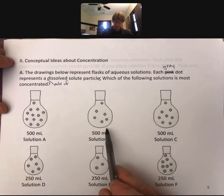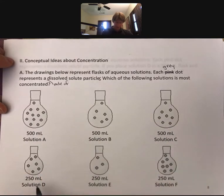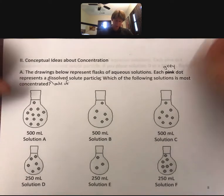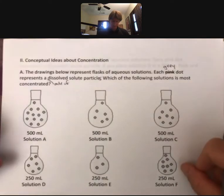We've got 500 milliliter flasks here on top: solutions A, B, and C. We've got 250 milliliters down here on the bottom. Let's think about which is the most concentrated of the ones on the top, then we'll think about the most concentrated of the ones on the bottom, and then we'll compare the two.